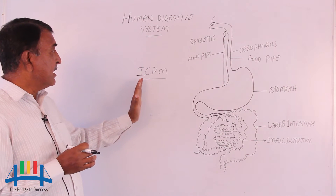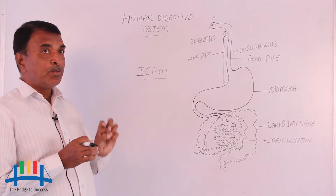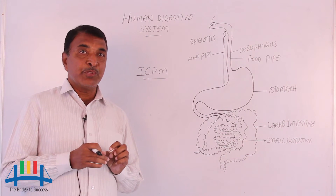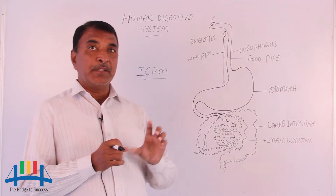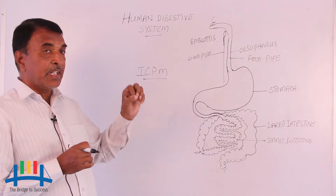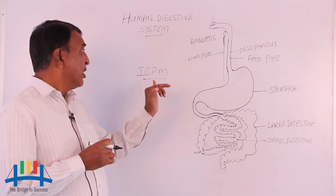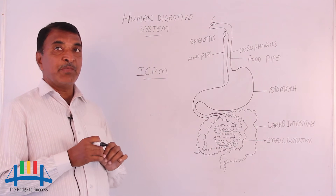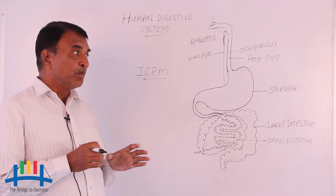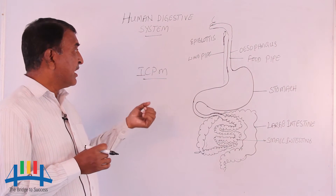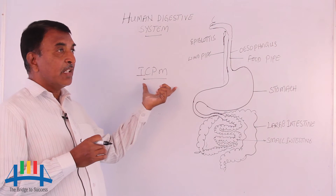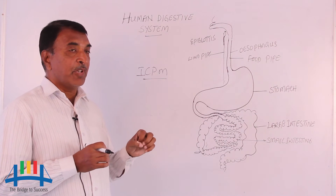So these four types: first, let us take the incisors — incisors are useful for cutting food. Canines are used for tearing the food. Premolars and molars are used for grinding the food material. As we are taking different types of food material, the teeth are very important.